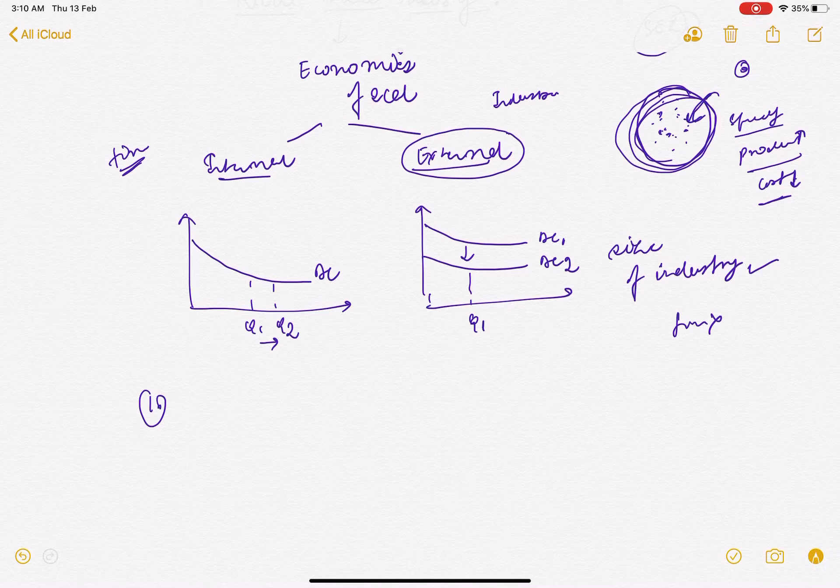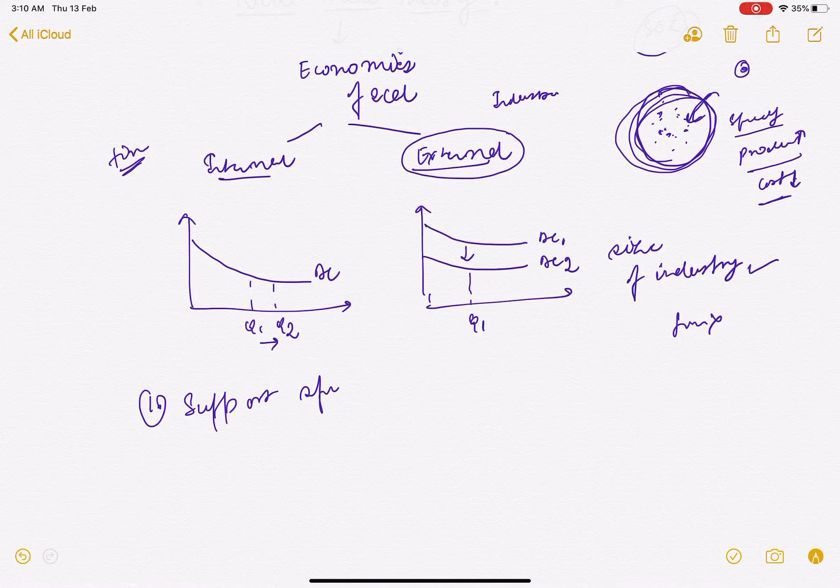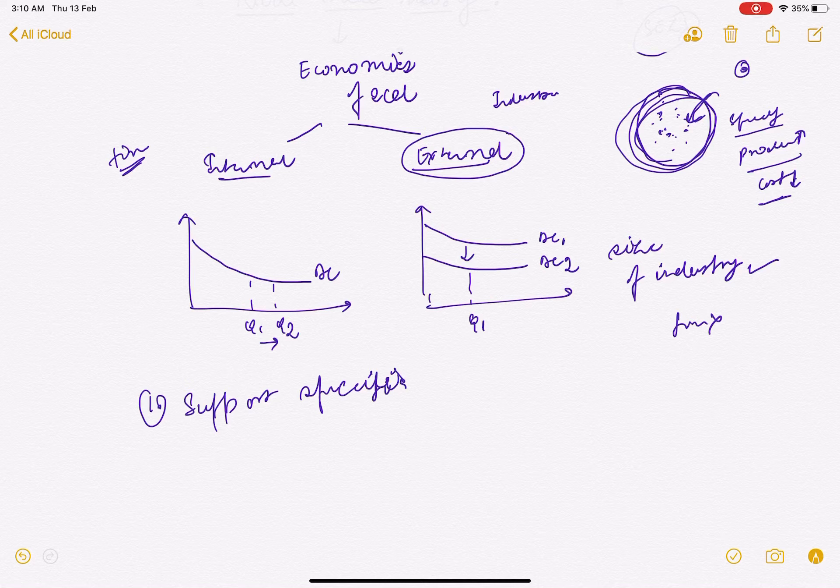It means that only when the number of firms increase then they will be able to use specialized suppliers, and thereby costs reduce. So they have support of specialized labor which is very easy to get if we have many firms in one place cluster.